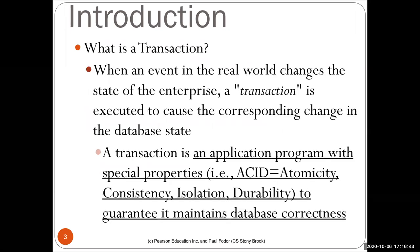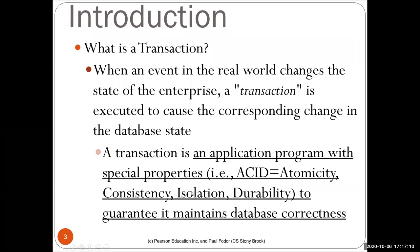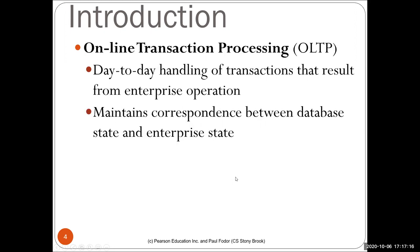Updates to databases are called transactions. When an event in the real world changes the state of the enterprise, a transaction is executed to cause that change in the database state. It's essentially an application program with special properties to guarantee it maintains database correctness. We'll talk about atomicity, consistency, isolation, and durability today. Transactions are maintained by an online transaction processing system, or OLTP, which maintains the correspondence between the database state and the enterprise state.